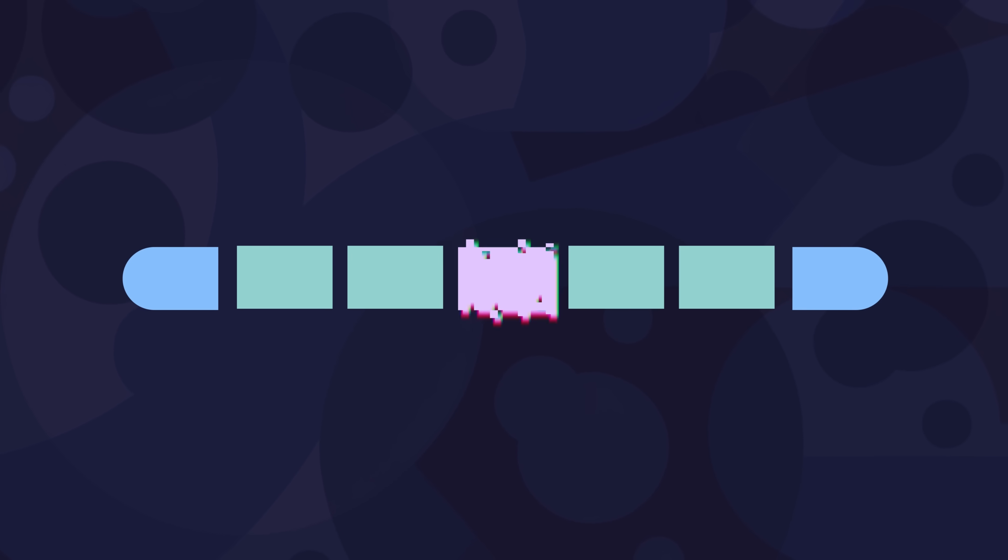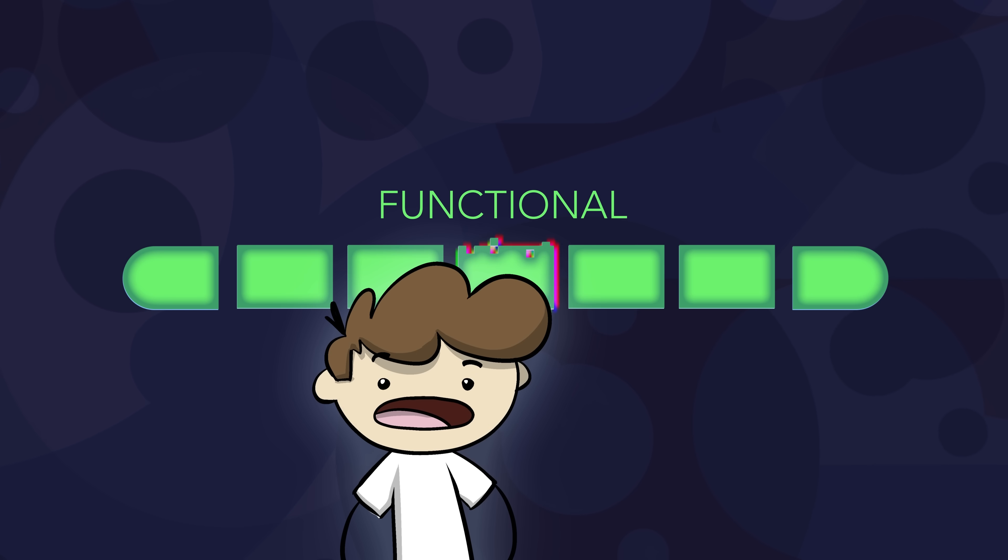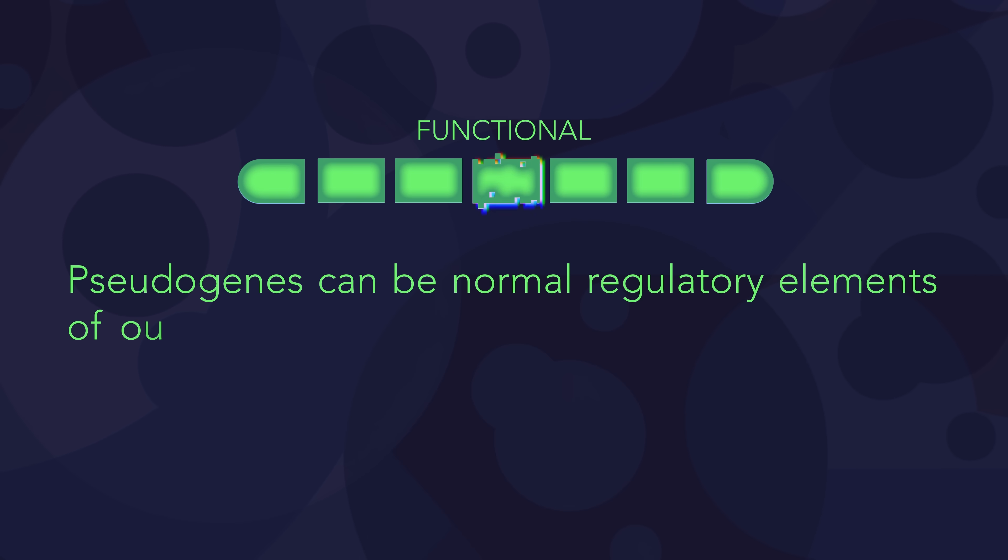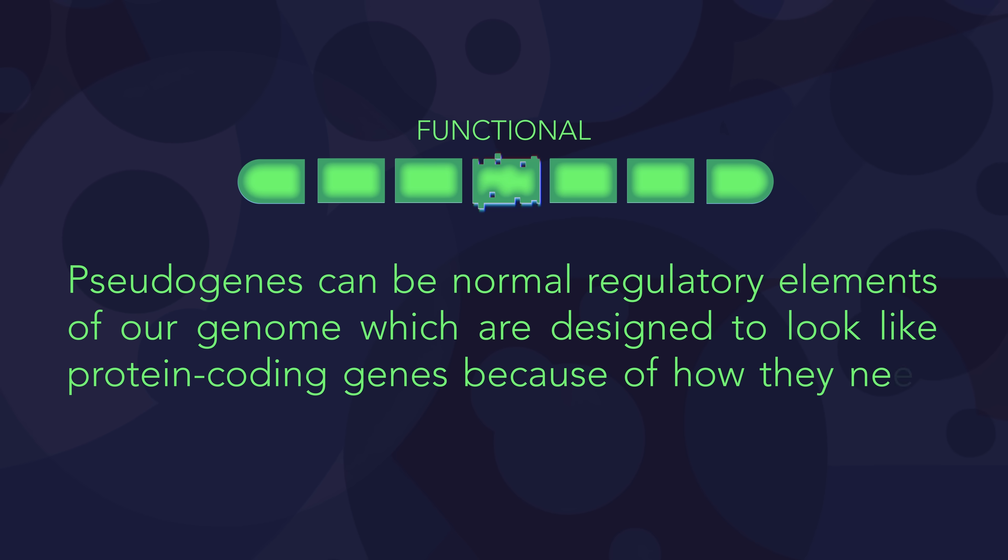But it turns out many pseudogenes aren't like rusty, broken cars. They're actually functional and they work just like they're supposed to. Kind of like a turn signal. They work, people just don't use them. Pseudogenes can be normal regulatory elements of our genome, which are designed to look like protein-coding genes because of how they need to function.